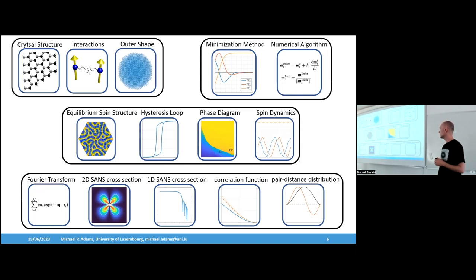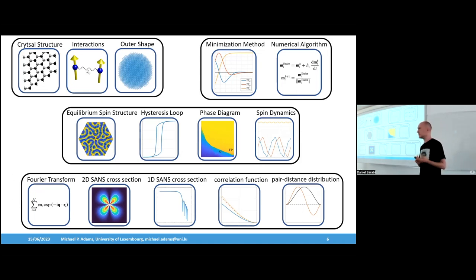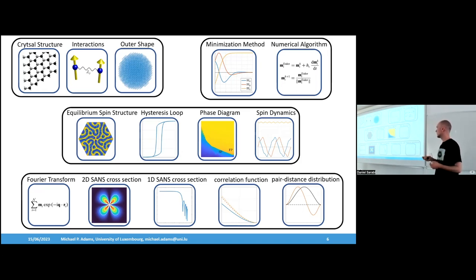How is this done? You take your equilibrium spin structures — a dataset of magnetization vectors and position data — and you perform a Fourier transform. Once you have the Fourier transform, you can calculate a 2D scattering cross section, or a 1D scattering cross section, or if you do the inverse Fourier transform you get a correlation function that describes the magnetic correlations in the material.